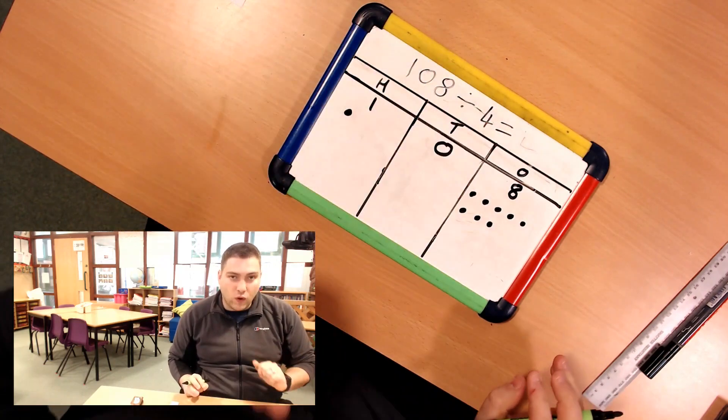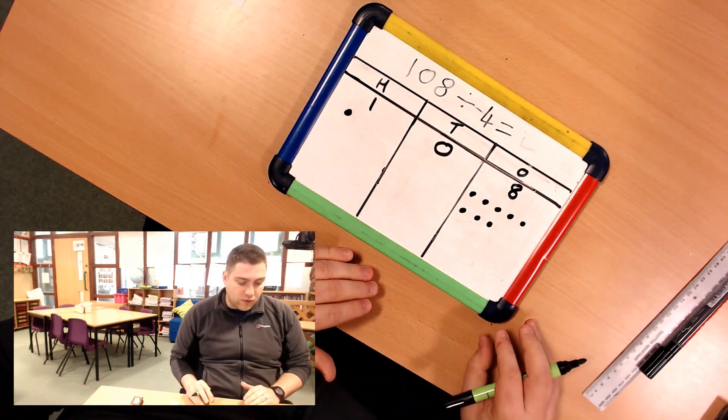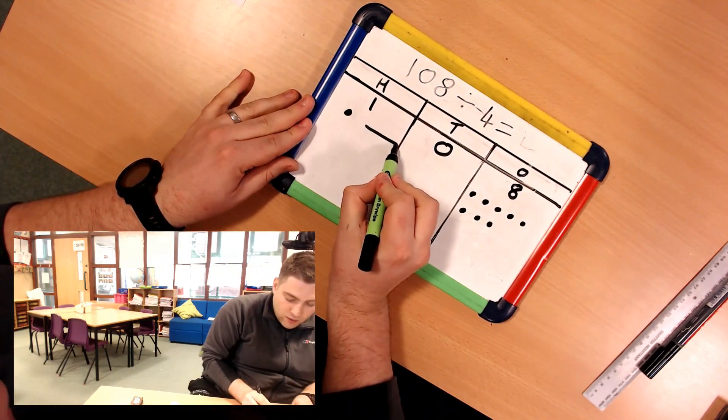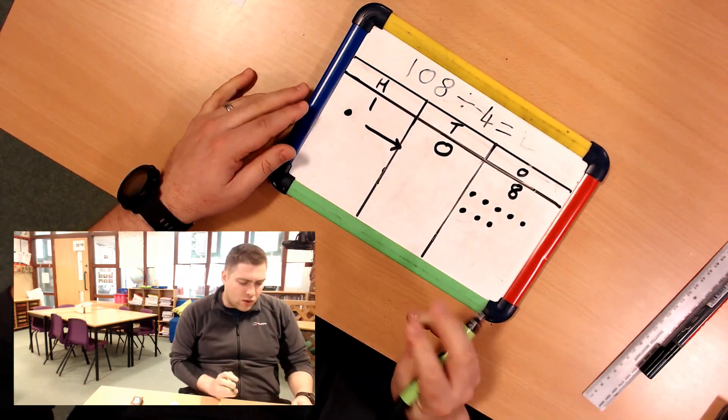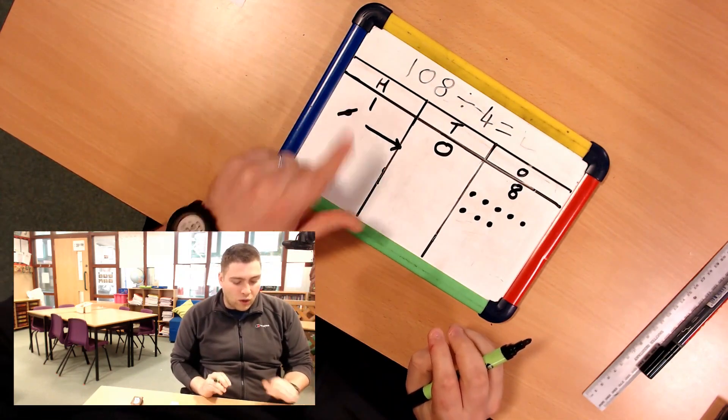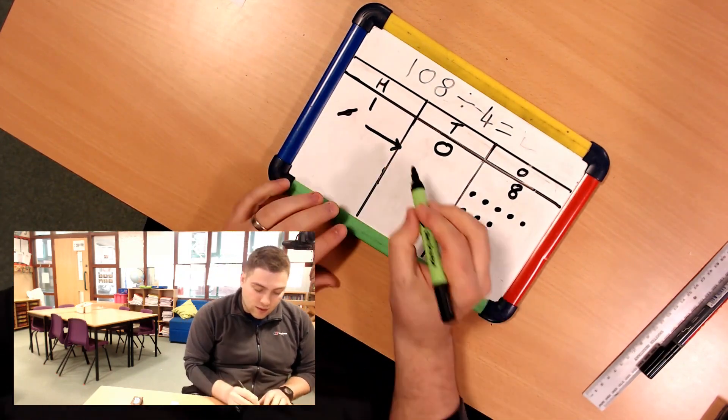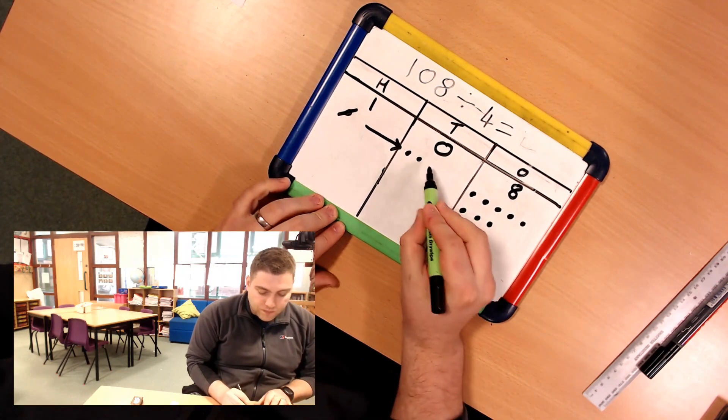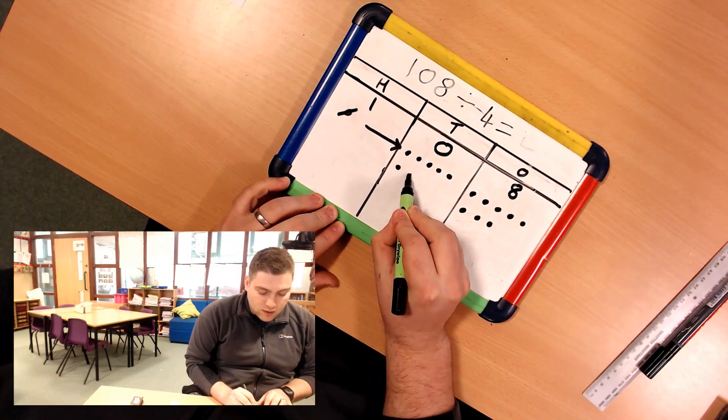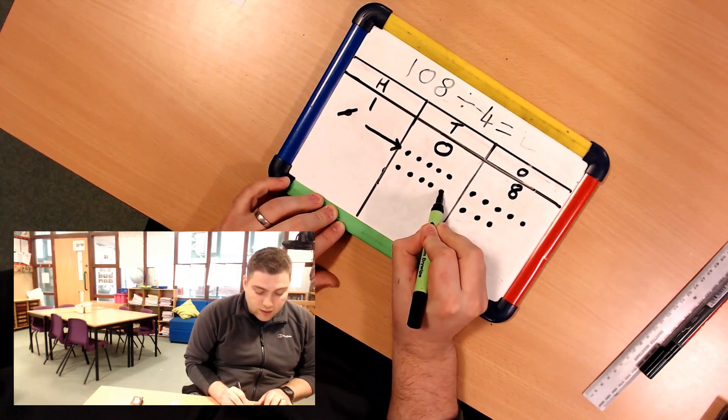My divisor is 4 so I need to make equal groups of 4. I can't make any of my 100s because I've only got 1 dot so I need to exchange that over. This time I'm going to cross it out so I know that I've used it. That means that my 100 is the same as 10 10s. 2, 3, 4, 5, 6, 7, 8, 9, and 10.